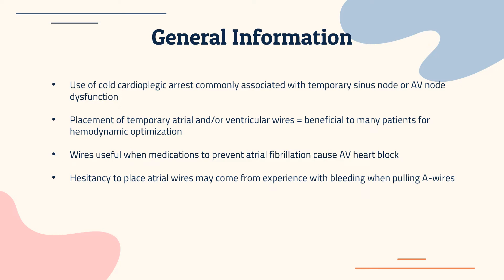The use of cold cardioplegic arrest is commonly associated with temporary sinus node or AV node dysfunction. Placement of temporary atrial and/or ventricular wires is beneficial to many patients for hemodynamic optimization post cardiac surgery. Wires are useful when medications to prevent atrial fibrillation cause AV heart block. Hesitancy to pace atrial wires may come from experience with bleeding when pulling atrial wires, which can sometimes cause tamponade.